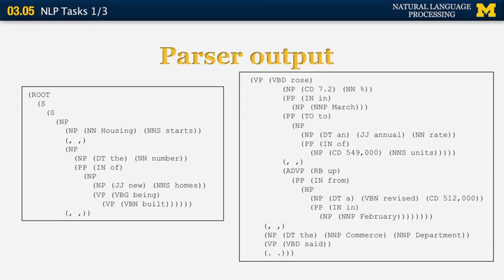The output of the parser looks like this. For example, the sentence is: 'Housing starts, the number of new homes being built, rose 7.2% in March to an annual rate of 549,000 units.'